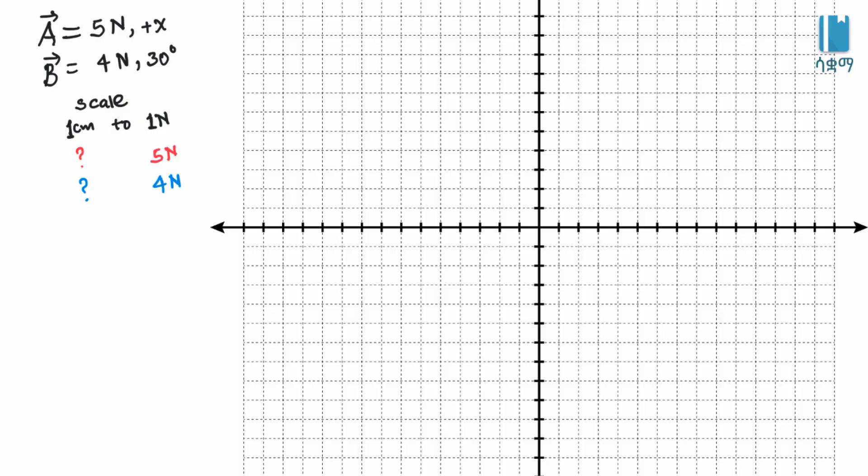Now to start the procedure, we use a square paper. We draw the x-axis and set up our coordinate system on the square paper. We will use this to graphically represent our vectors using the triangle method.